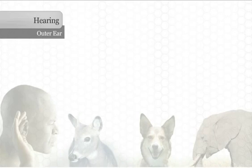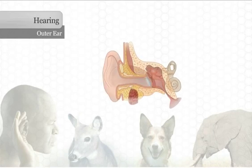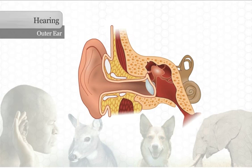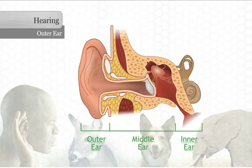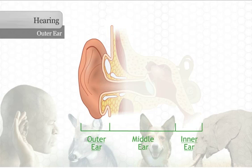Our ears have three main parts: the outer ear, the middle ear, and the inner ear. The outer ear is the first part of the ear. It is what you can see on the sides of your head. It is basically a funnel for sounds.